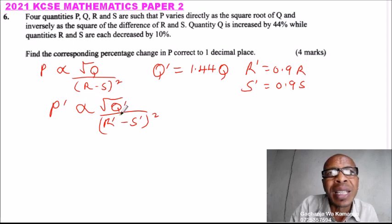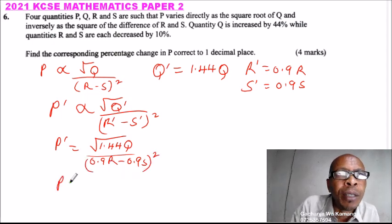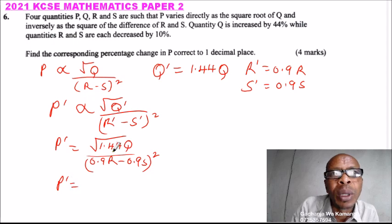Now we replace our new Q with these values. You can't jump this step but this is just for demonstration. Our new Q is the square root of 1.44 of the old Q, divided by 0.9 of the old R minus 0.9 of the old S, and this is squared.